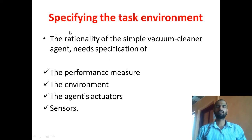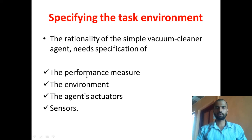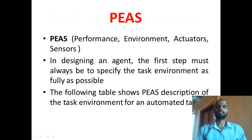So, how do we specify the task environment? We specify the task environment based on the performance measure, the actual environment, the agents, actuators, and sensors. These parameters together form a concept called PEAS — that is, Performance, Environment, Actuators, and Sensors. In designing an agent, the first step must always be to specify the task environment as fully as possible.